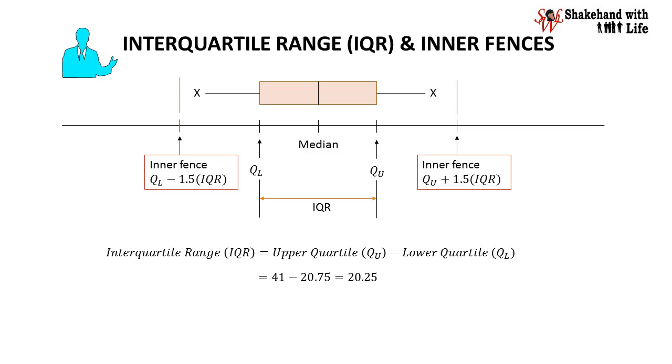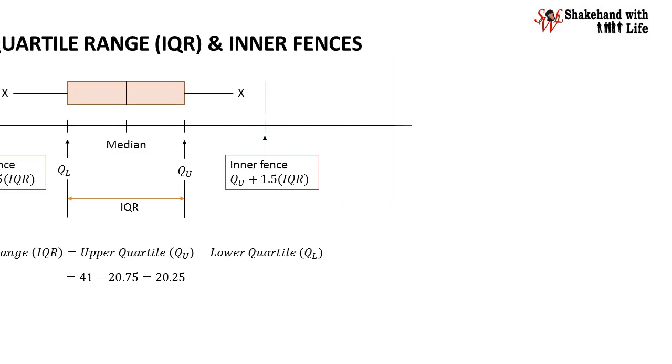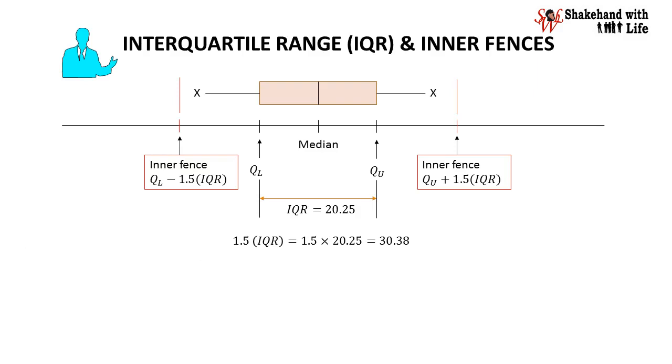Now inner fences of the box plot are at a distance of 1.5 IQR interquartile range to the right of the upper hinge or upper quartile and to the left of the lower hinge or lower quartile. So 1.5 IQR equal to 1.5 multiplied 20.25 and we get 30.38.